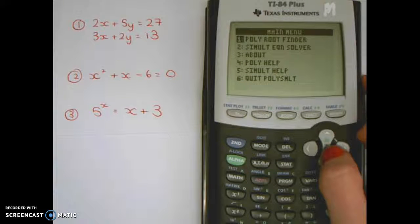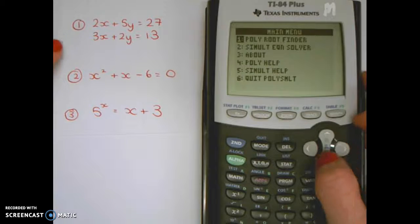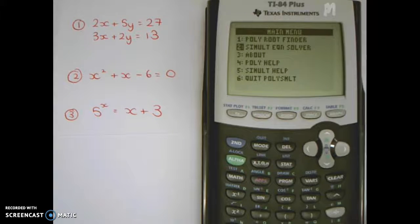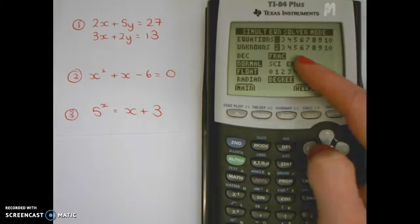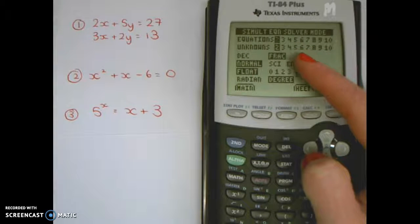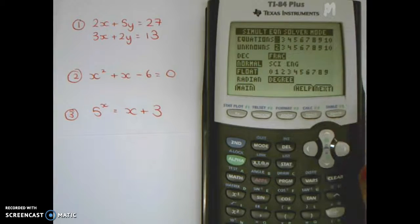Let's start with simultaneous equation finders. For question one, solve this simultaneous equation. Go to number two, simultaneous equation. It asks how many equations? Two. How many unknowns? Two. Do you want the answer as a fraction or decimal? Let's leave it as a fraction and go to next.